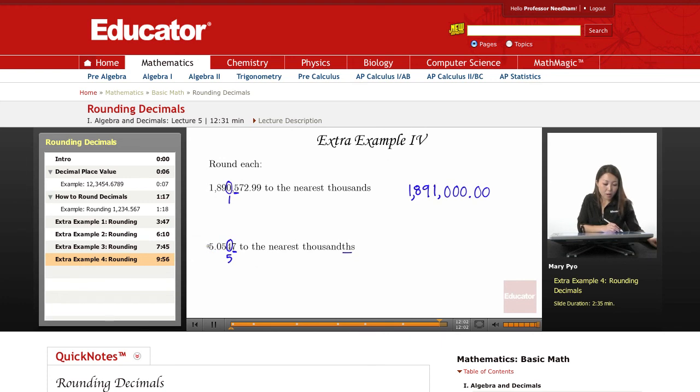And then when I rewrite my number, I'm going to write all the numbers in front of it up to my circled number, and then all the numbers behind it becomes zeros.